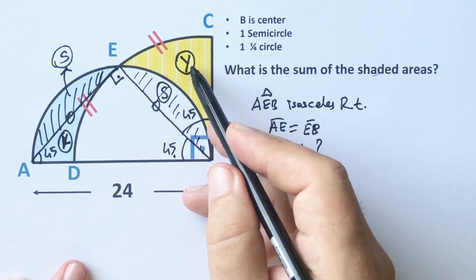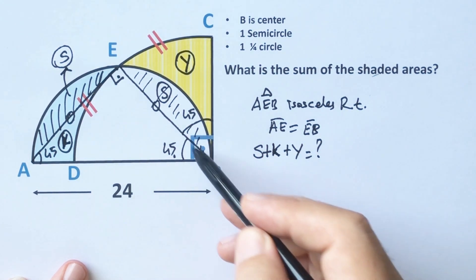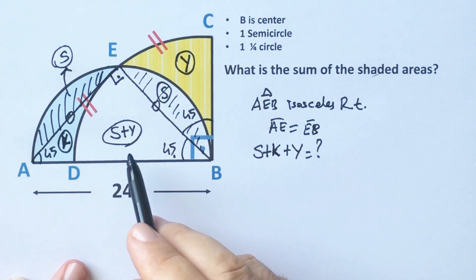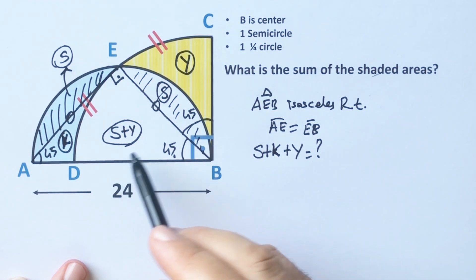If you notice that if this area equals S plus Y, the area of this sector must be equal S plus Y because they are the same sector, right?